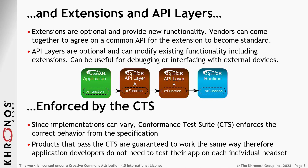All of this is enforced by the conformance test suite. OpenXR doesn't mean anything unless we can actually guarantee it's going to work the same way — and that's what these tests are for. To become OpenXR conformant, you must pass all these tests. We look for things like: when you render a cube, is it rendered in the right orientation? Or when you do hand tracking, does it give out the right outputs? It is constantly being worked on, and it is the most costly but also the most important thing.